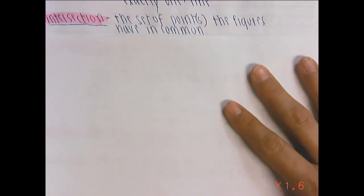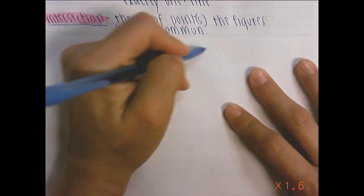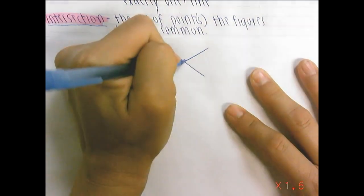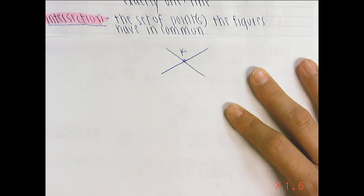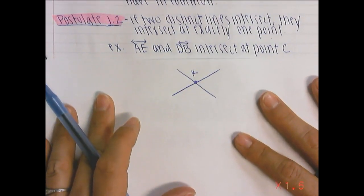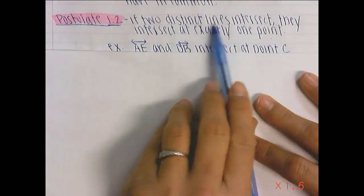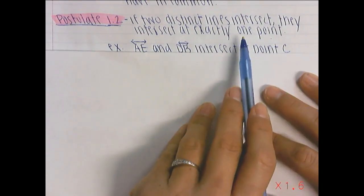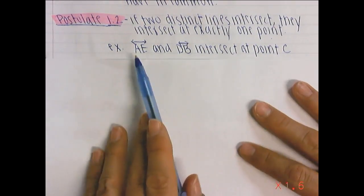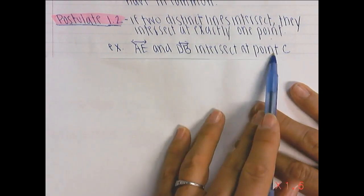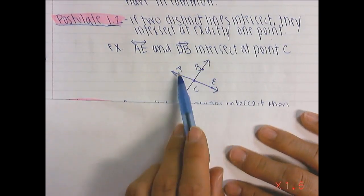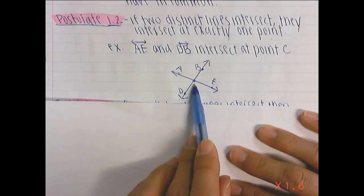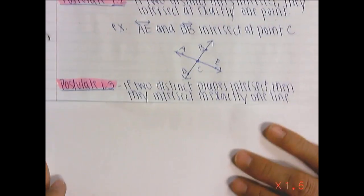The next thing we're going to talk about is intersection. We all know where things intersect. Here's a line and here's another line. Right here, let's call this K. That would be the point of intersection where these two segments or lines intersect. The point that they have in common. That's an intersection. So now we move along to postulate 1.2. So if two distinct lines intersect, they intersect at exactly one point. Kind of is the definition of intersection. So for example, we have line AE and line DB. They intersect at point C. So postulate 1.2 just basically states the definition of intersection. So here we have line AE and line DB. Right where they meet is the point of intersection, point C.